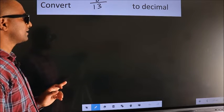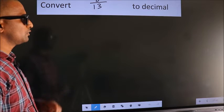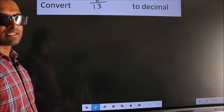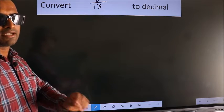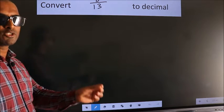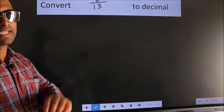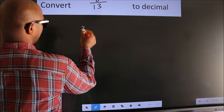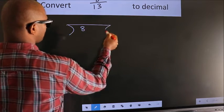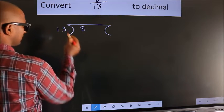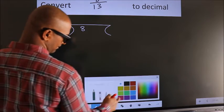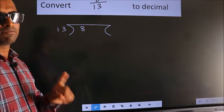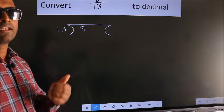Convert 8 by 13 to decimal. To convert this to decimal, we have to divide. And to divide, we should frame it in this way: 8 here, 13 here. This is your step 1.